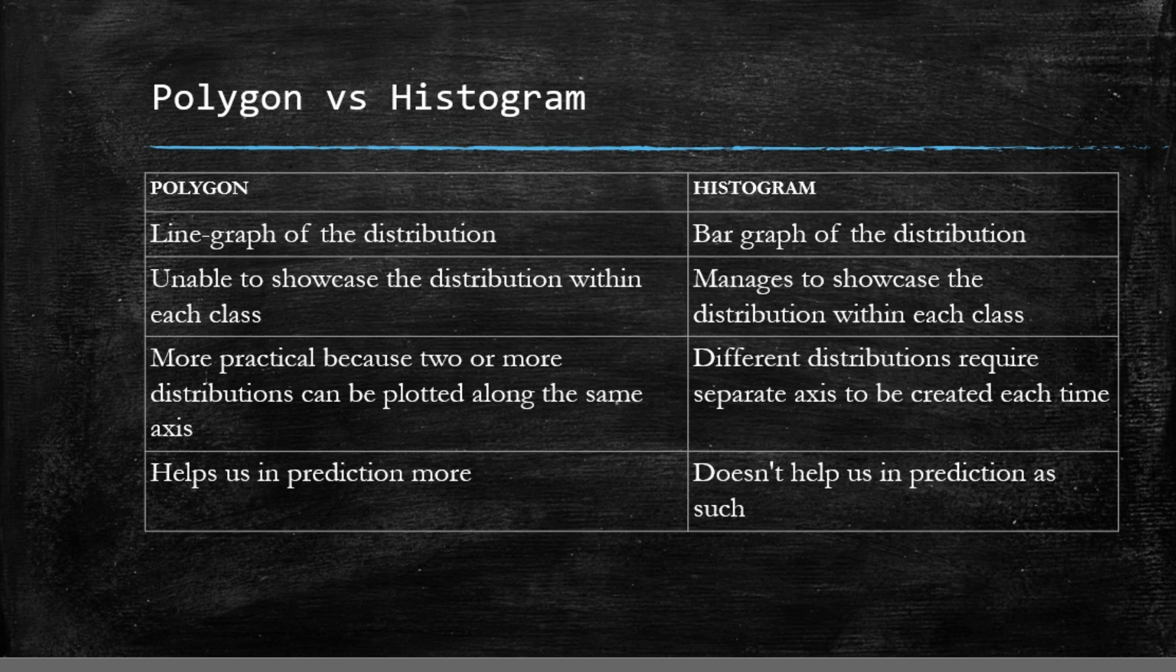So, what is the main difference between a polygon and a histogram? Well, definitionally a histogram is a bar graph of the frequency distribution while a polygon is a line graph of the distribution.